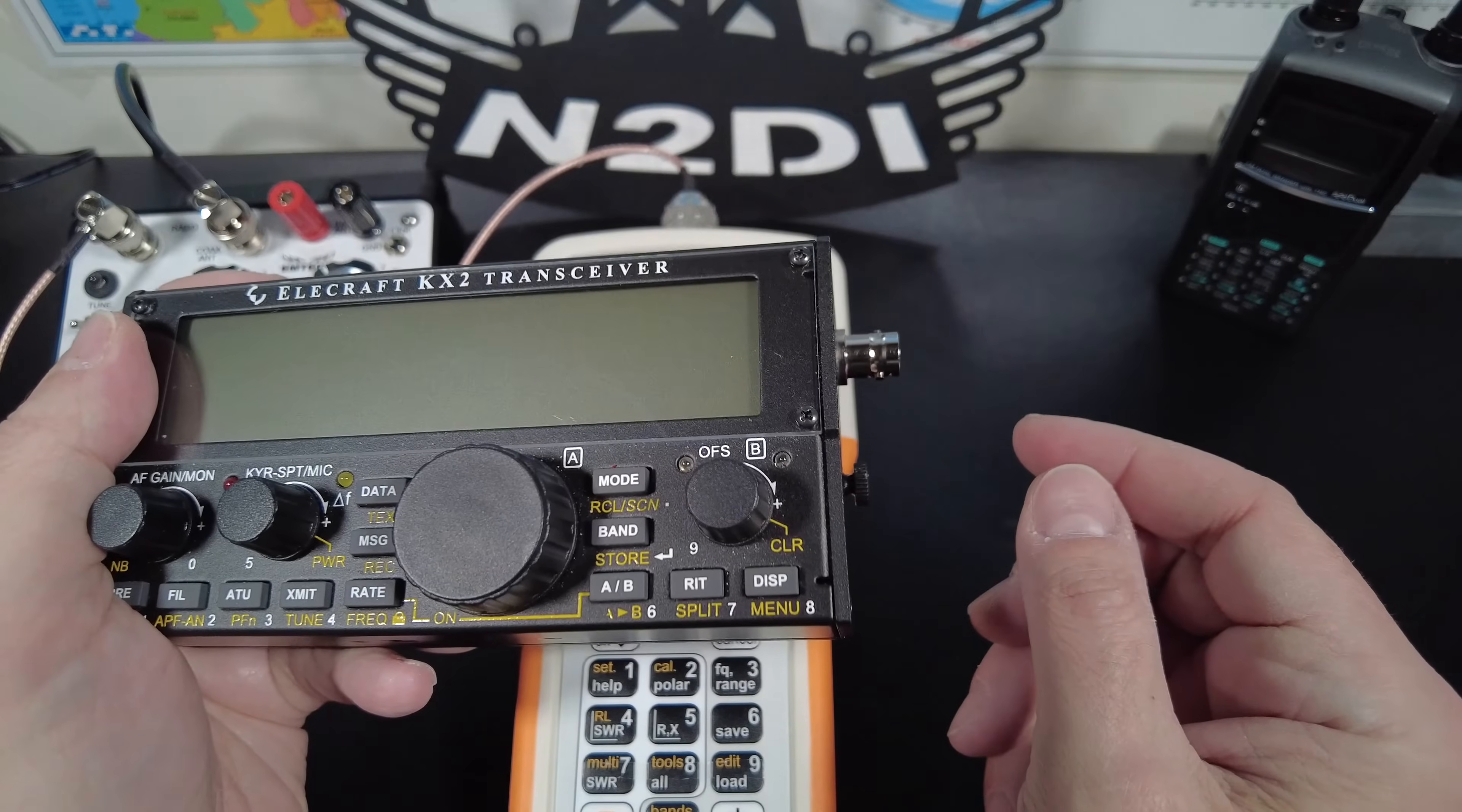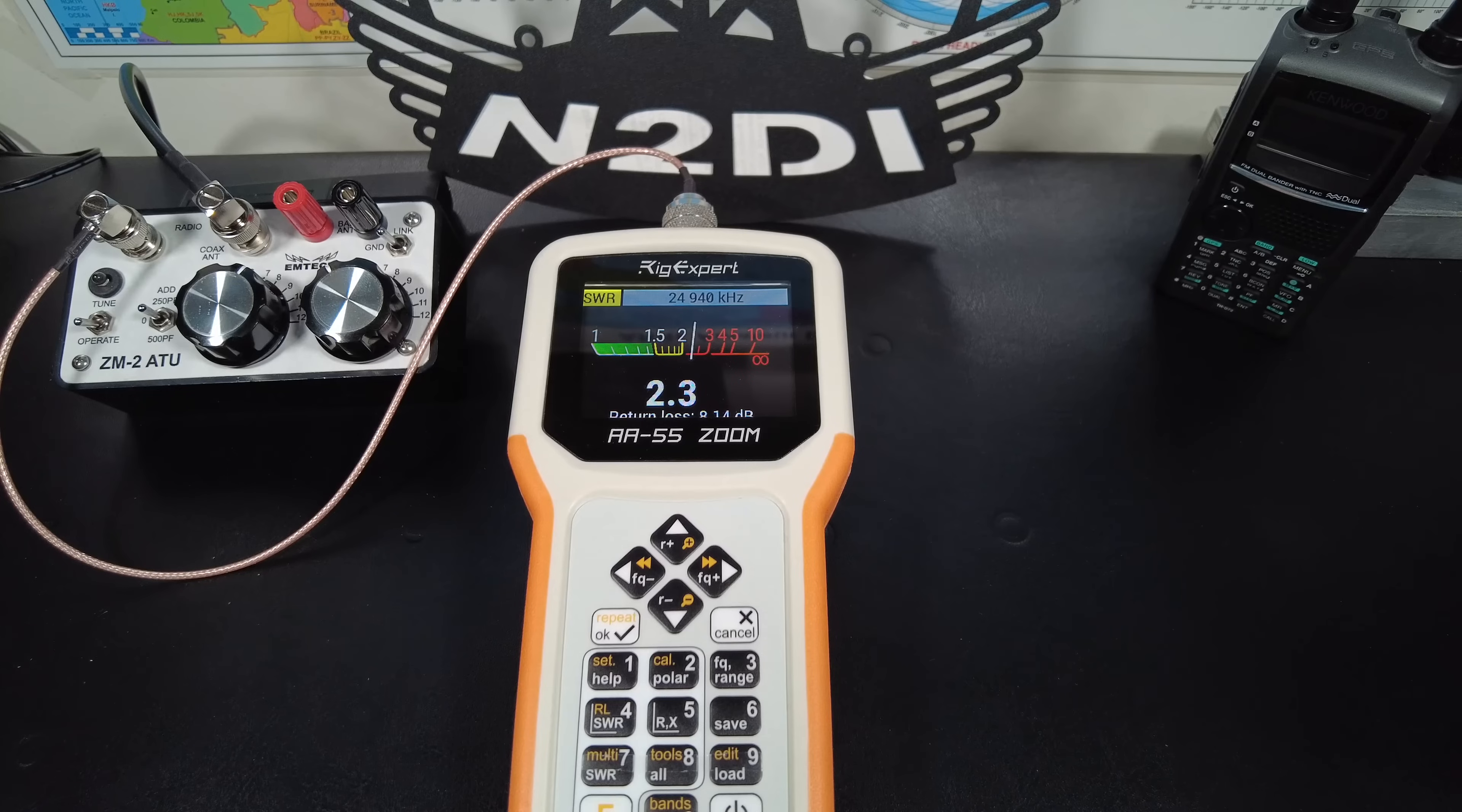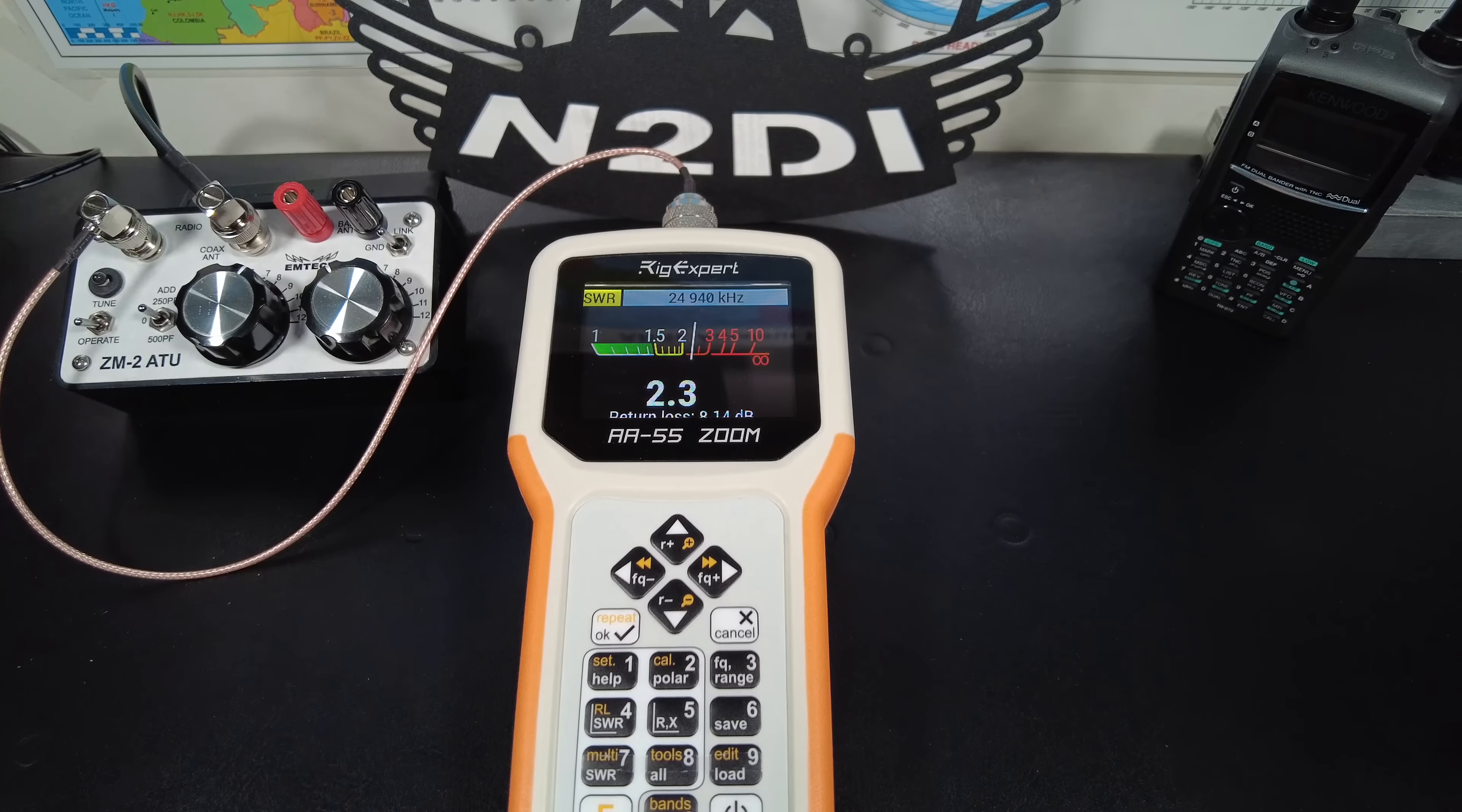When you transmit from your radio, it sends an RF signal out of the antenna port, down your coax, and to your antenna. When that energy hits the antenna, it's radiated out if everything is working correctly. For that to work correctly, your radio wants to see a 50-ohm load. Your coax is usually 50 ohms, and if your antenna is perfectly matched, it will appear to be a 50-ohm load as well. The problem that you will most frequently encounter is that your antenna will not appear to be a perfect 50-ohm load, and that happens for a variety of reasons.